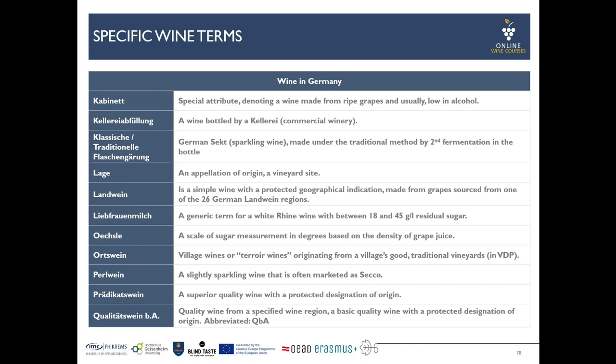Here we have a further list of really specific wine terms for wine made in Germany. Kellereiabfüllung is similar to Gutsabfüllung, referring to wine bottled by a Kellerei — in that case, a bigger commercial winery. Klassische Flaschengärung or Traditionelle Flaschengärung is a term you very often find on sparkling wine produced in Germany, made by the traditional second fermentation in the bottle. Liebfrauenmilch is a generic term for a white blended wine which is usually found with a residual sugar between 18 to 45 grams per liter.